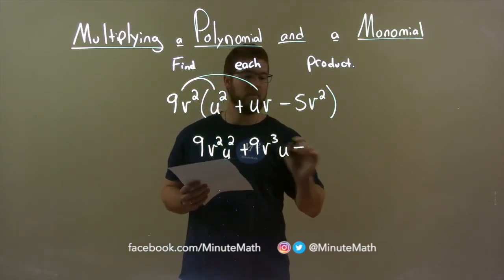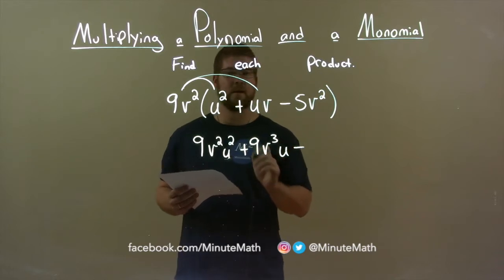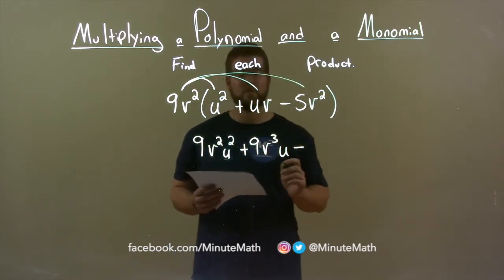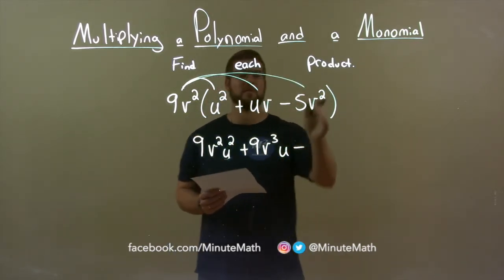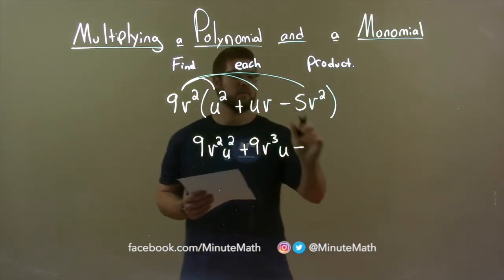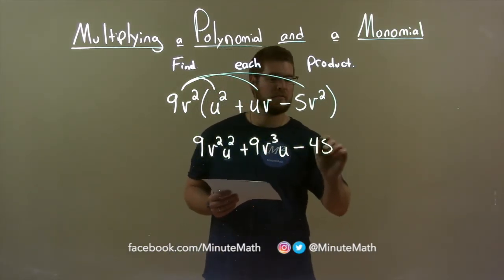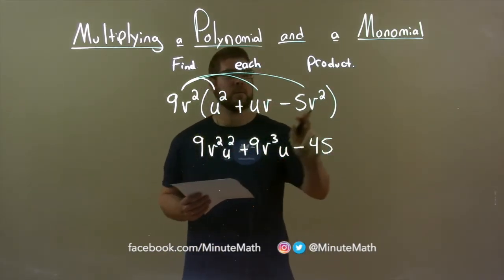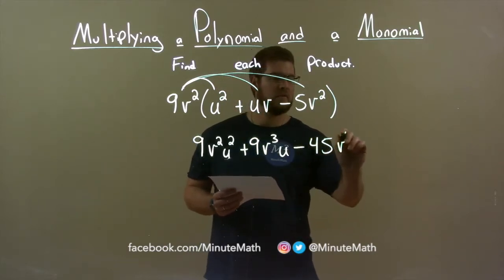Last two terms are separated now by a subtraction sign, so let's bring that down. Now we multiply 9v squared times 5v squared. 9 times 5 is 45, and v squared times v squared is v to the fourth power.